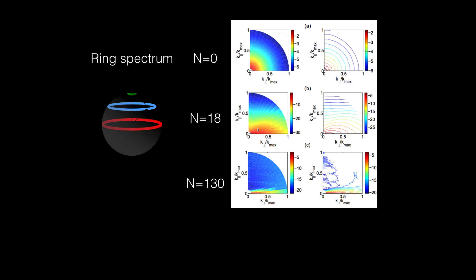But for larger N, the flow is anisotropic. The energy is concentrated near the equator. For N equal to 18, there is energy here. For N equal to 130 it is even more intense near the equator. These are contour plots and density plots.